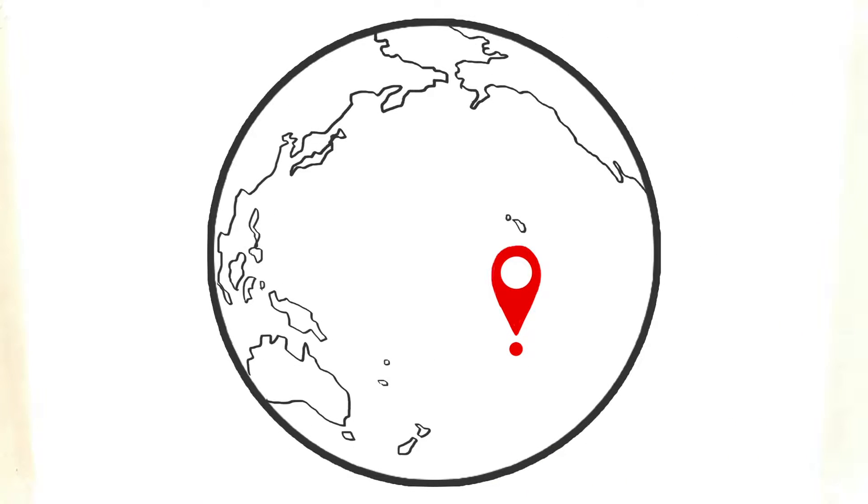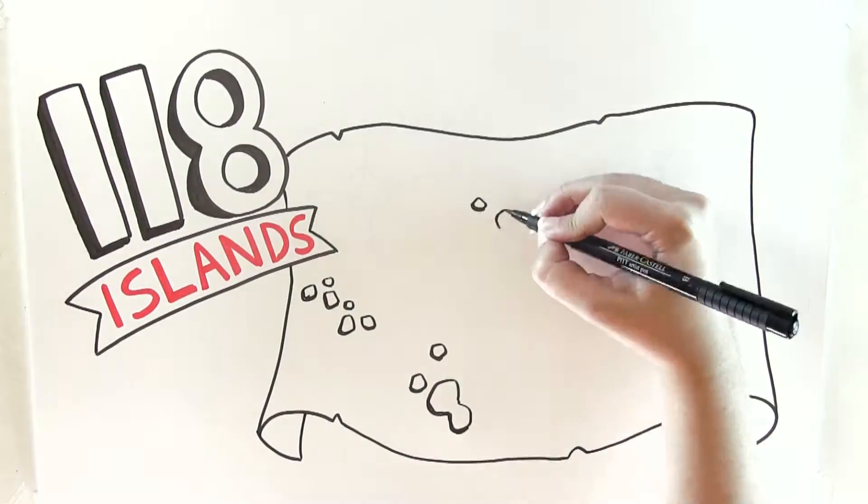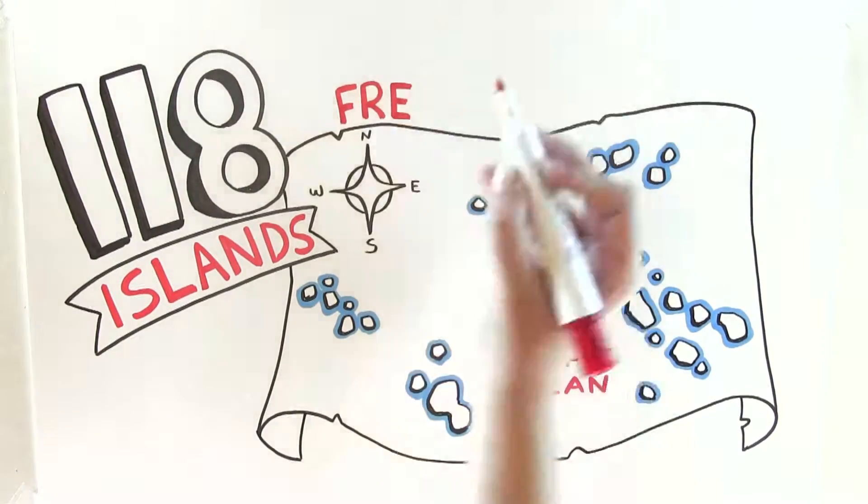Going to French Polynesia is not like the Caribbean or Hawaii. There are 118 islands like the fabled Bora Bora, Morea, and Taha, spread out across an expanse of the South Pacific the size of Western Europe.